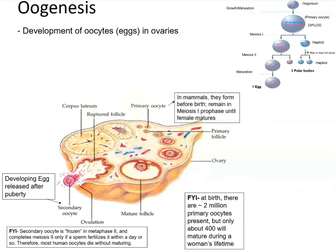Meiosis in females is referred to as oogenesis. The diploid cells divide by meiosis and eventually produce an egg. You actually make 4 cells, but there is an uneven division of the cytoplasm — you make 1 big cell and 3 very small cells called polar bodies, which the body degrades. The one larger cell matures into an egg, which is released during ovulation. If it is not fertilized, it is broken down.